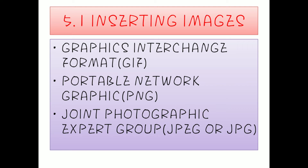There are three different types of formats in which we can save images. The first type is GIF, which stands for Graphics Interchange Format. The second one is PNG, which stands for Portable Network Graphics. The third one is JPEG, or JPG, which stands for Joint Photographic Expert Group. These three are the different image formats we can use in HTML to insert images.